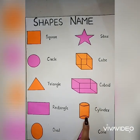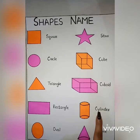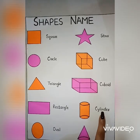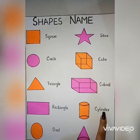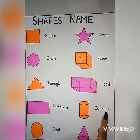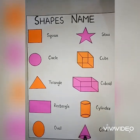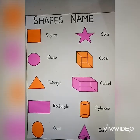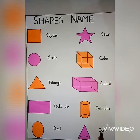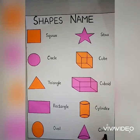This is a cylinder. C-Y-L-I-N-D-E-R, cylinder. And the last one is cone. This is a cone. C-O-N-E, cone.